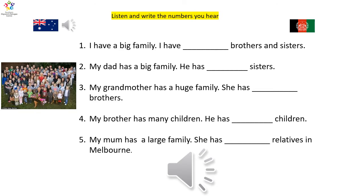Number 3. My grandmother has a huge family. She has 73 brothers. Number 4. My brother has many children. He has 15 children. Number 5. My mum has a large family. She has 50 relatives in Melbourne.